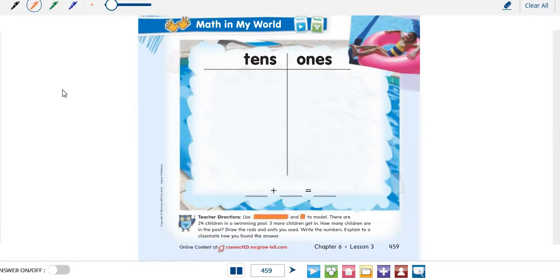Let's start with the story. There are 24 children in a swimming pool. Three more children get in. Let's use tens rods and unit cubes to model the problem. There are 24 children in the swimming pool. How many tens rods do you need to draw, great one? What do you think?